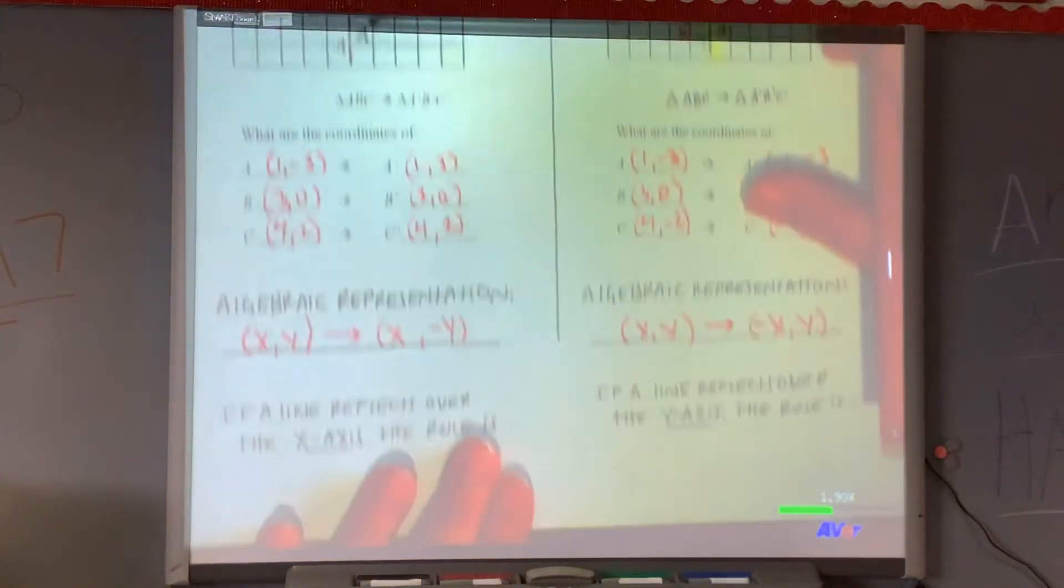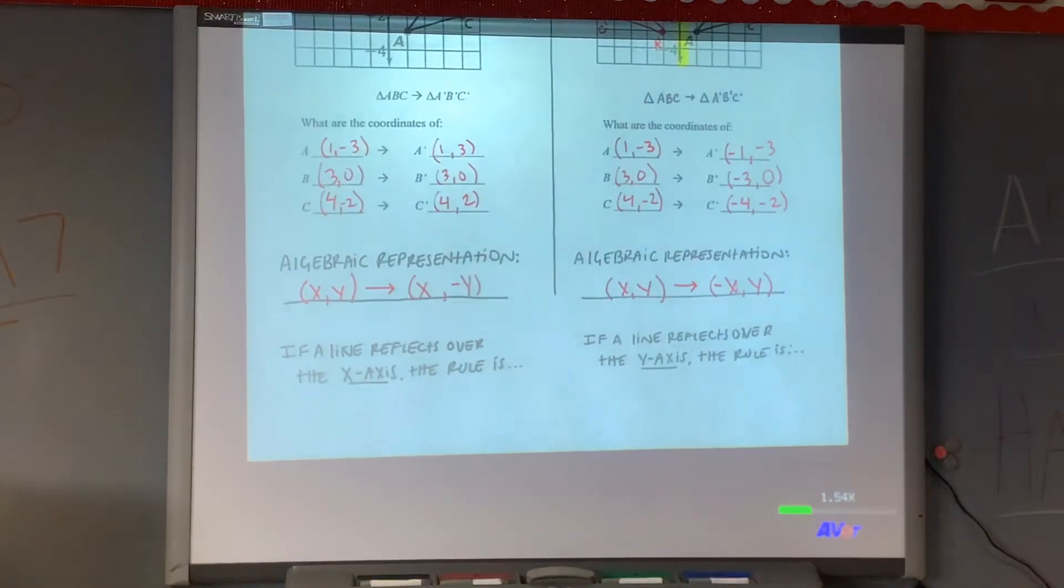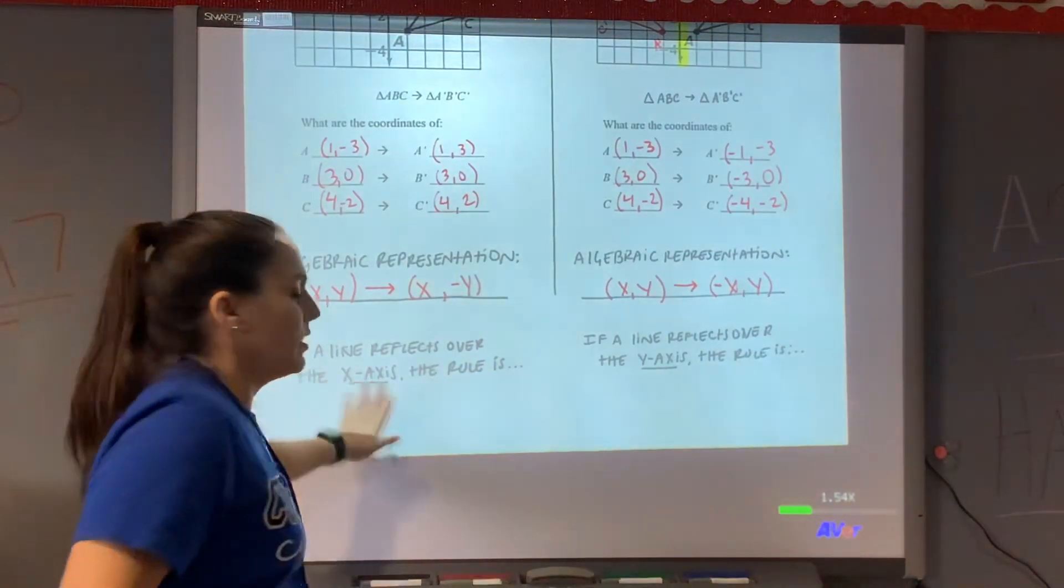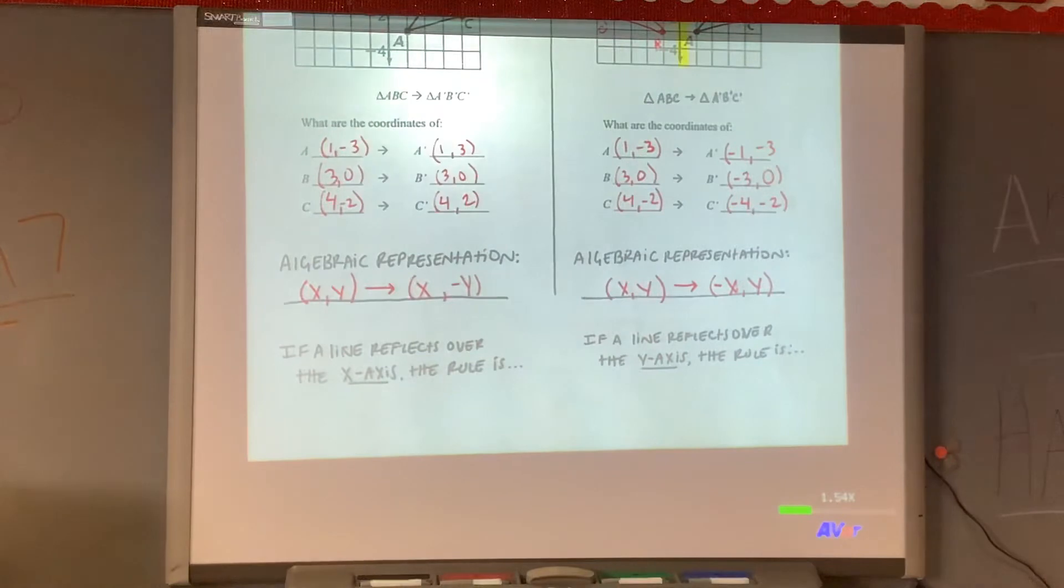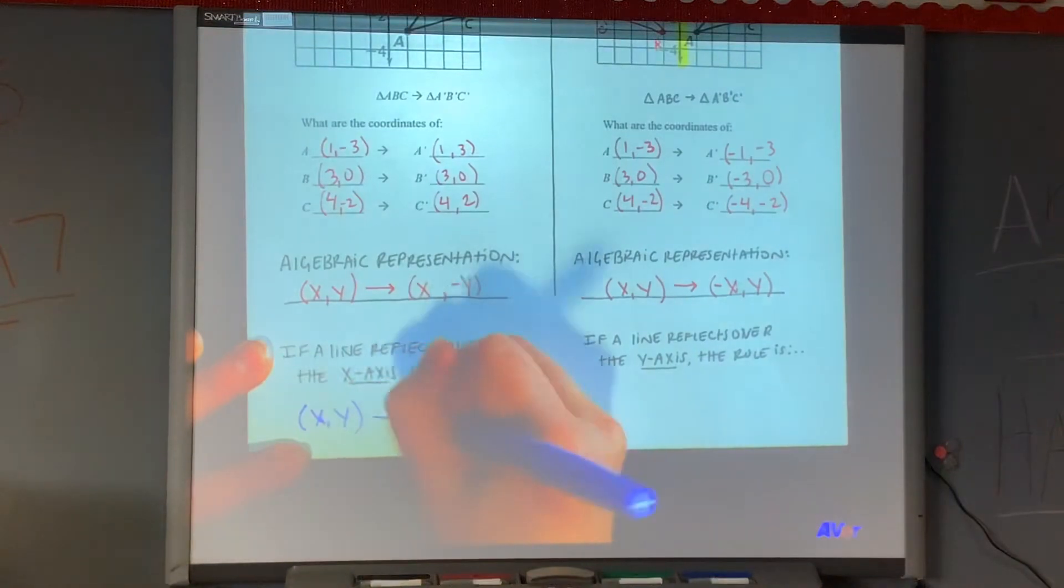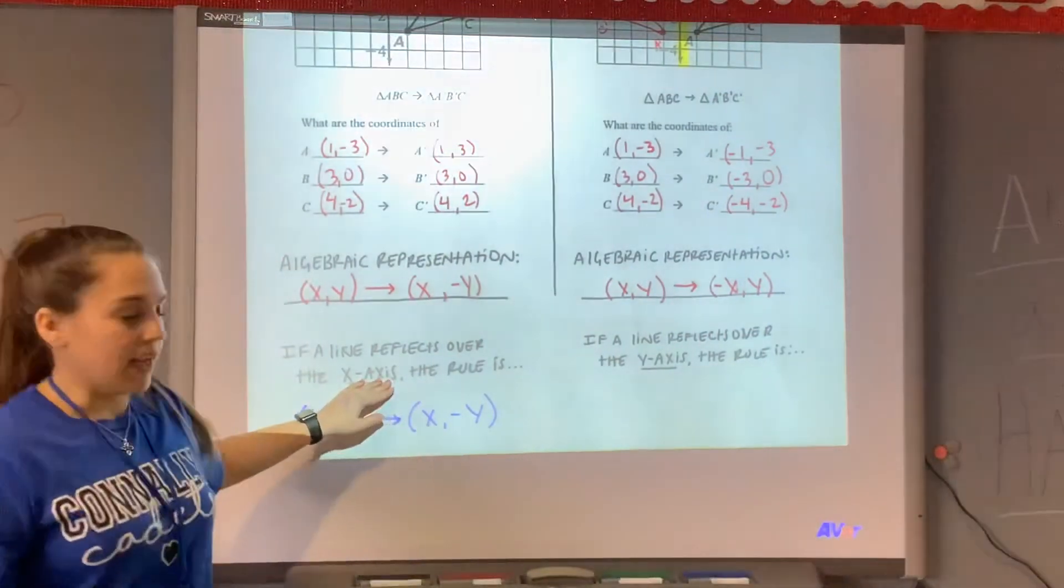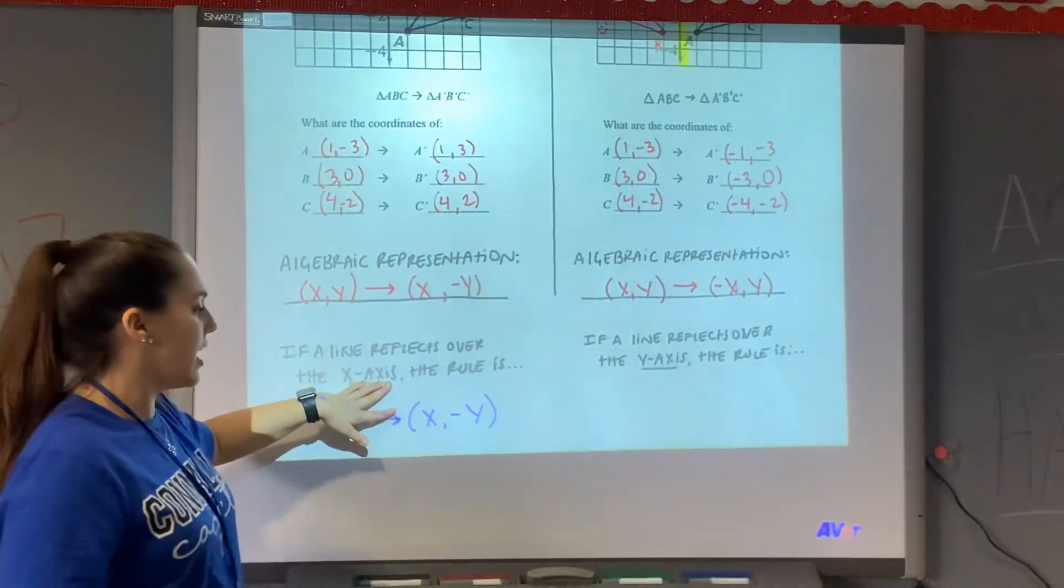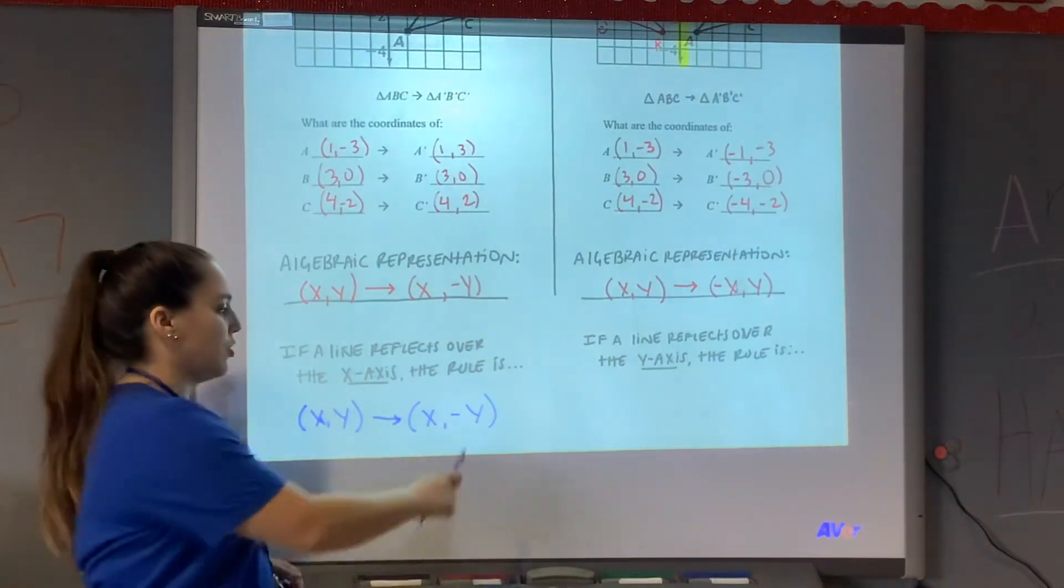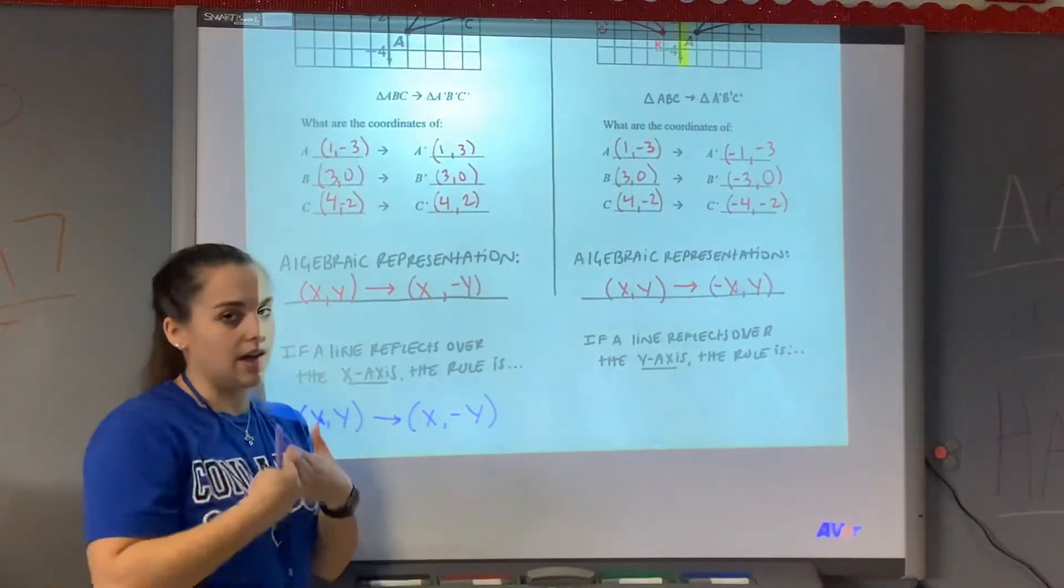So our algebraic representation is going to start with a coordinate. It's going to say we have a regular coordinate (x, y). And it's going to change to something new. The way it changes on this one is it gets a negative x and the y stays the same. So at the bottom, we basically are concluding our notes. It says if a line reflects over the x-axis, the rule is always going to be the thing that we have wrote right above, (x, -y). Which is saying that no matter where or what your shape looks like, if you flip the shape over the x-axis, the coordinates will change to make the y a negative, or if it was a negative, make it a positive. It's the opposite.